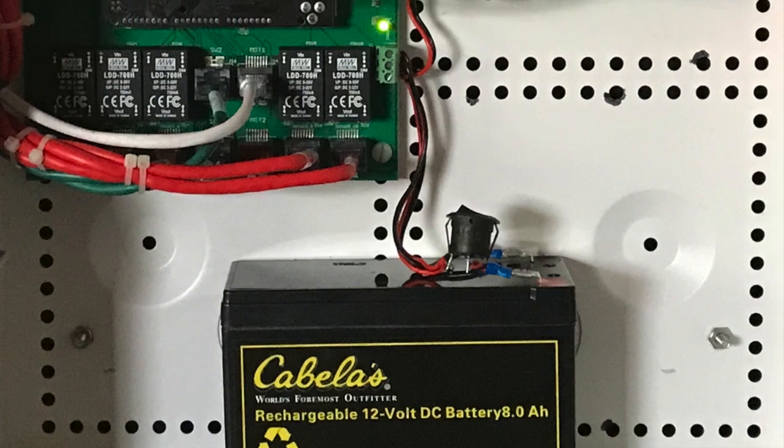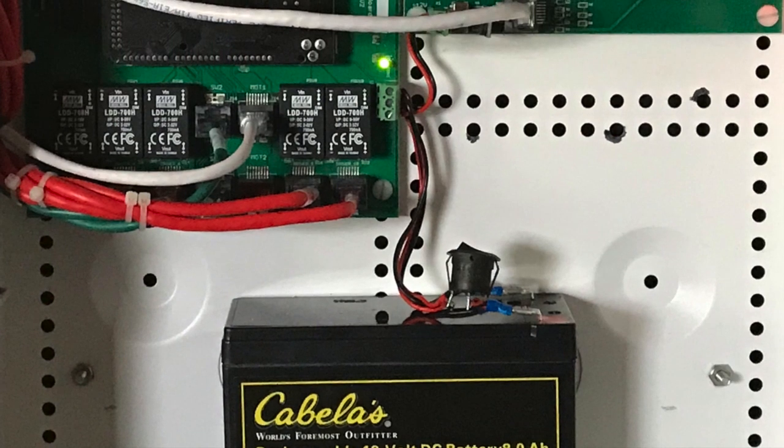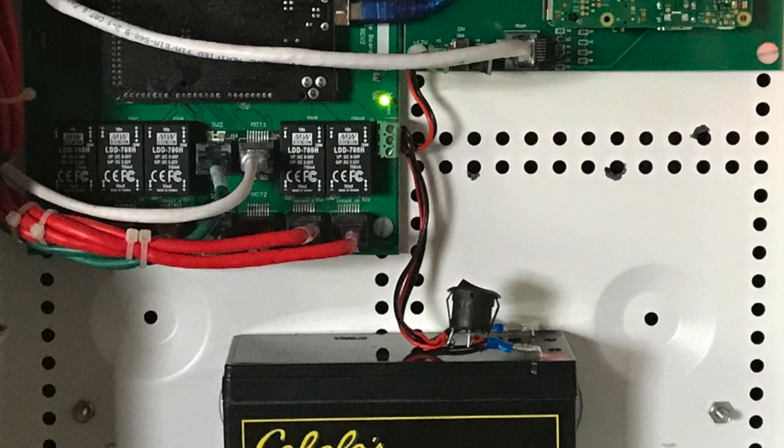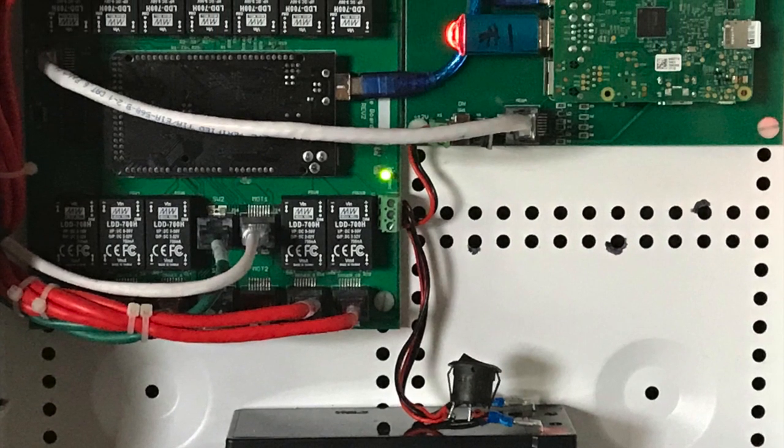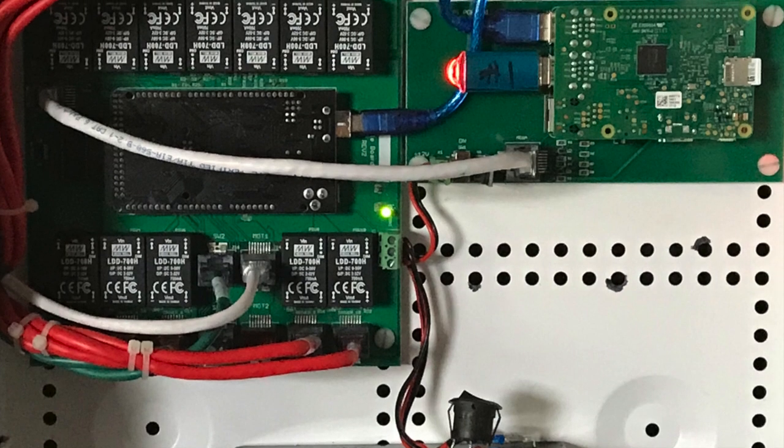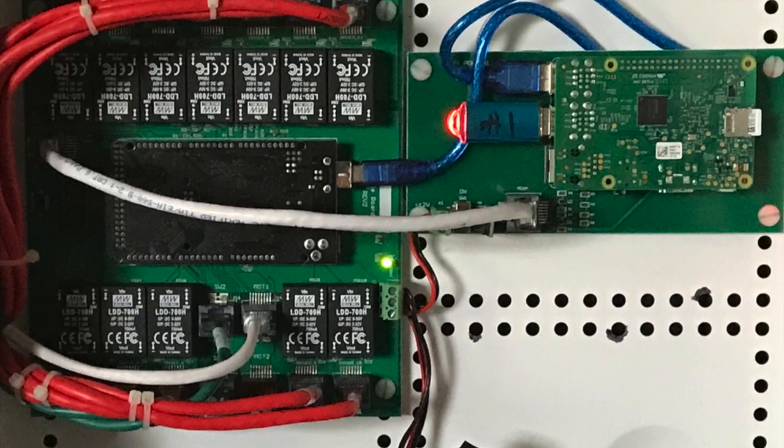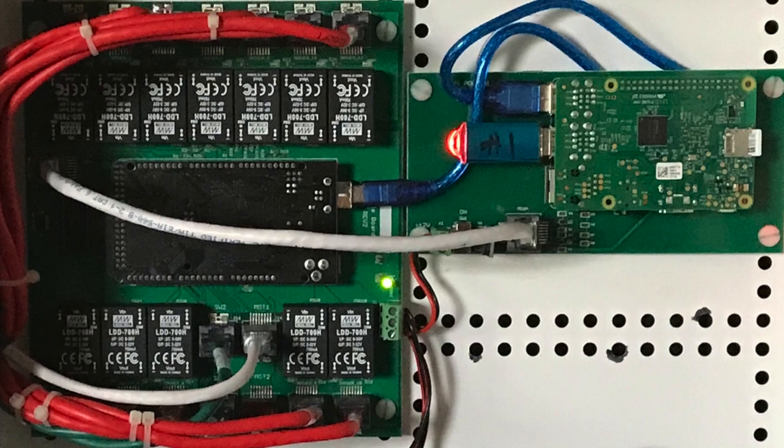This demo features our smallest controller. This little single board controller can accommodate up to 14 switches, 2 motion detectors and 84 light fixtures that you can just daisy chain together on 12 different channels.